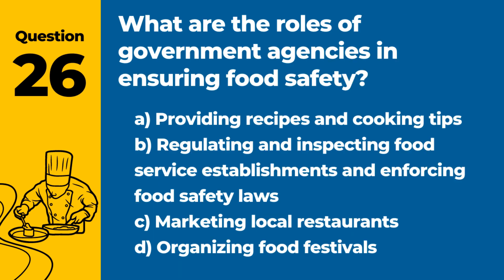Question 26. What are the roles of government agencies in ensuring food safety? Answer: B. Regulating and inspecting food service establishments and enforcing food safety laws. Government agencies play a critical role in maintaining public health standards.